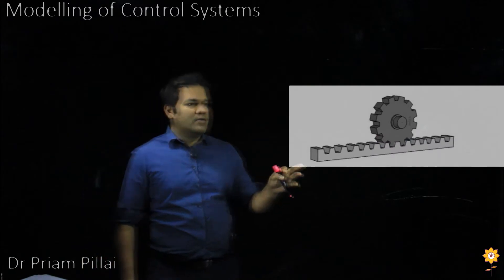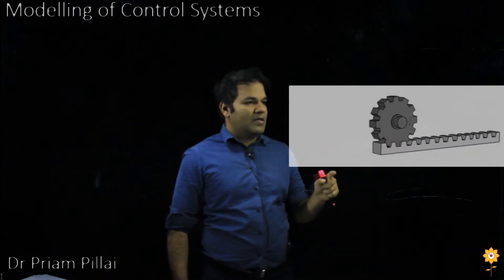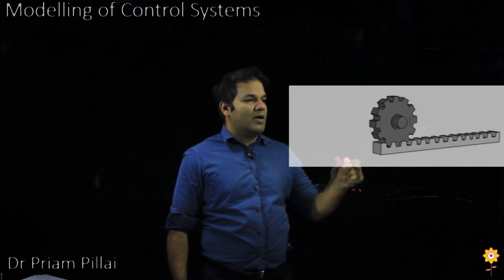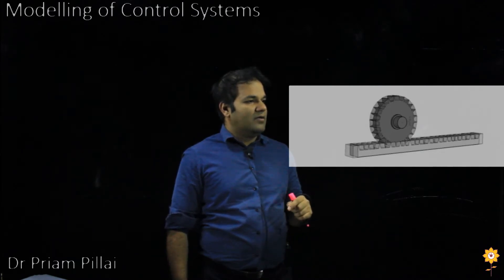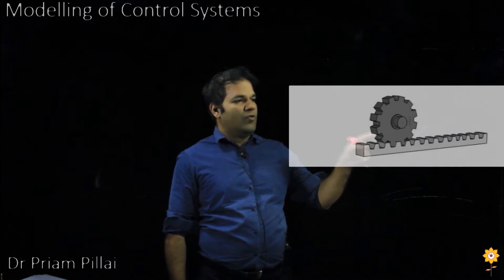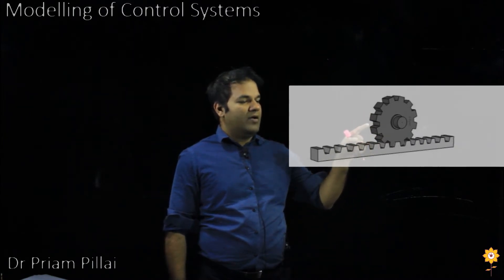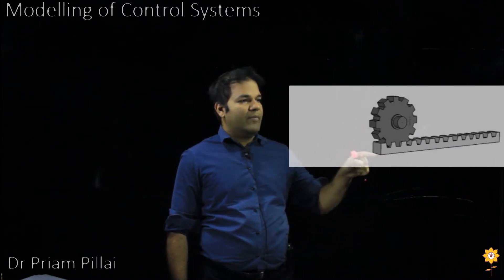A rack and pinion consists of a gear that slides or rotates over a rack, causing a linear motion. So you have a rotating motor behind here that causes this to slide back and forth.